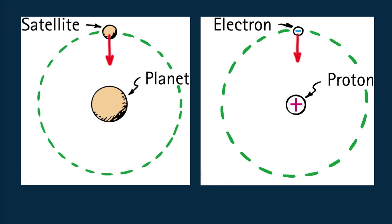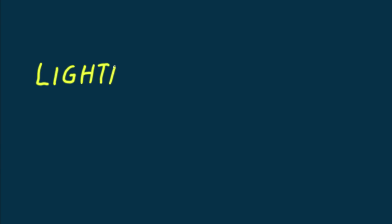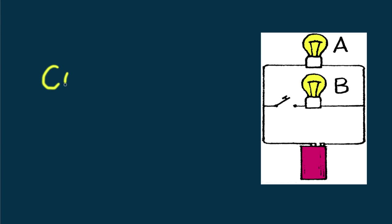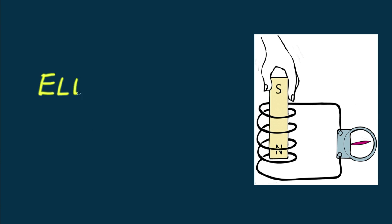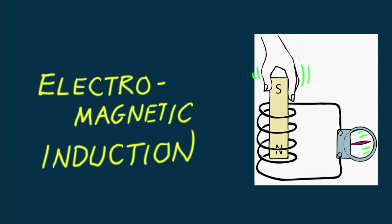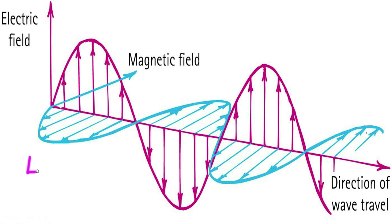Recall in our study of atoms that subatomic particles such as protons and electrons are electrically charged. The electron is negatively charged and the proton is positively charged. Electricity includes a wide variety of well-known effects such as lightning, static electricity, current electricity, electromagnetic induction, and extends to the creation of electromagnetic radiation such as radio waves and light waves.